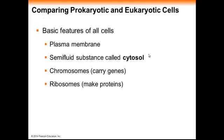If we compare prokaryotic and eukaryotic cells, they share some basic features. First of all, they all have a plasma membrane. They all contain some sort of semi-fluid substance called a cytosol — the prefix cyto means cell, and the suffix sol means fluid or liquid. They all have chromosomes, which carry genes, and they all have ribosomes, which make proteins.